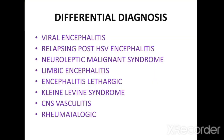Some differential diagnoses for autoimmune encephalitis include viral encephalitis, relapsing post-HSV encephalitis, neuroleptic malignant syndrome, limbic encephalitis, encephalitis lethargica, Kleine-Levin syndrome, CNS vasculitis, and other rheumatological conditions. That's all guys.